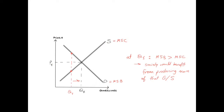To understand why, let's look at a situation where allocative efficiency doesn't exist. Allocative efficiency occurs when MSB equals MSC, so ideally this market should be producing Qe at a price of Pe. If the market is producing Q1, MSB is higher than MSC — society would actually benefit from producing more of that good or service. This good is under-provided or under-produced, because there is still more benefit to producing additional units.